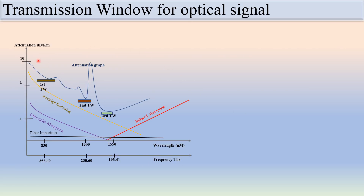Looking at the attenuation graph, you can see the attenuation decreasing and increasing, with the lowest attenuation region visible. This shows infrared absorption, the Rayleigh scattering curve, and ultraviolet absorption. In the second window, ultraviolet absorption and Rayleigh scattering are quite high, so the attenuation graph is high. When we go beyond 1700 nanometers, infrared absorption comes into existence. Therefore, the third window is the only one we can use for DWDM transmission.